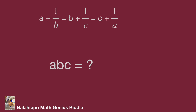Take a look at the given equations: A plus 1 over B equals B plus 1 over C equals C plus 1 over A, and the value we have to find is A times B times C. What are the connections? If we reduce these fractions, we will get A times B, B times C, and C times A — which will get us nearly to A times B times C.